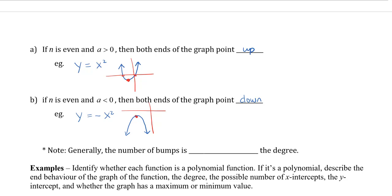One last note: generally, the number of bumps in the graph is one less than the degree. So if you look at the squared ones — degree 2 — notice there is only one bump.